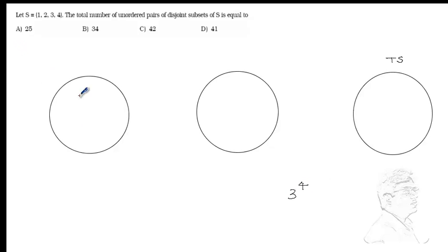In these ways we have such situations like one coming here, two going there, two coming here, one going there. But we don't want such situations because we want unordered pairs.